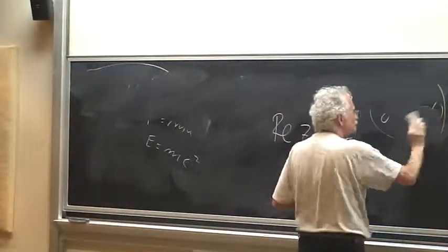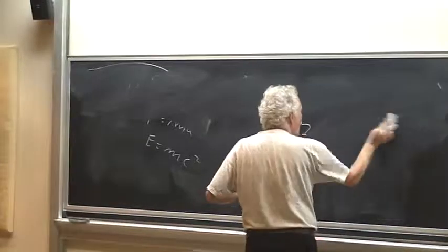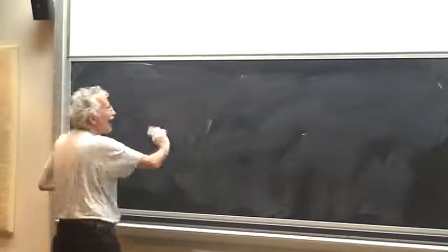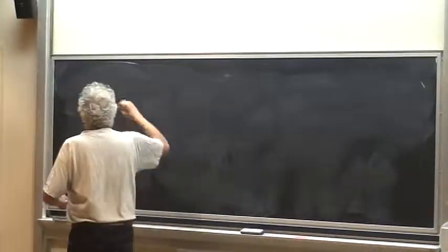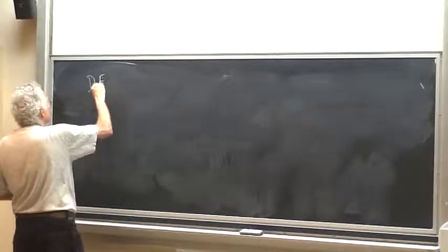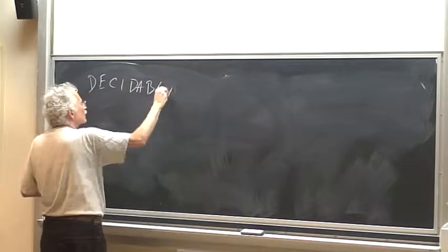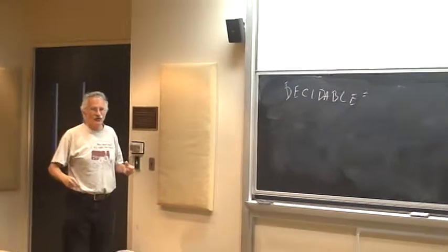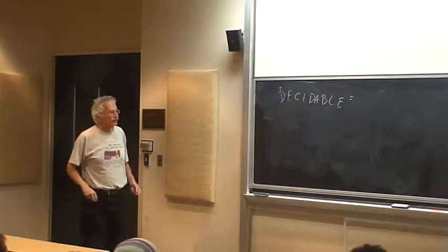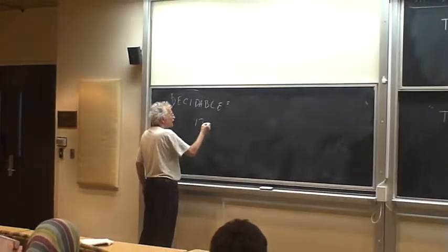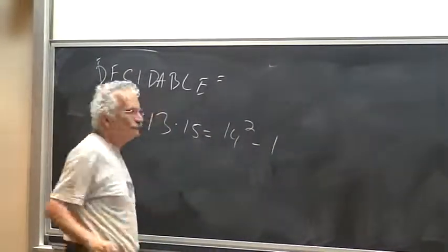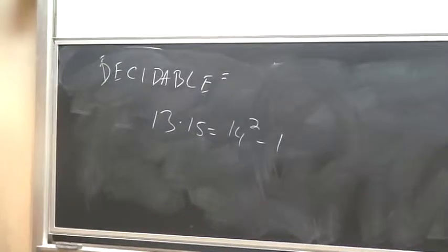So what do we have? We have a big ocean of gibberish. And then we have nice islands of decidables. I use decidables because it's easier to use, but in my sense. For which there exist algorithms for proving it. So for example, the statement 13 times 15 equals 14 square minus 1 belongs to a class of decidable statements.